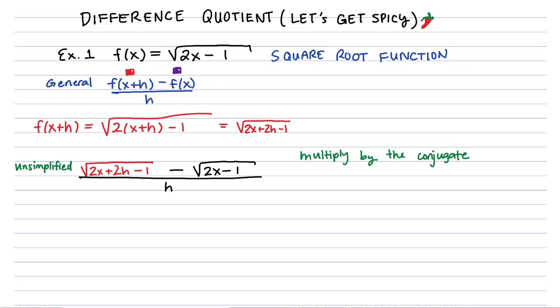So to multiply by the conjugate, what that's going to translate to is we're going to conjugate this minus into a plus. So we're going to multiply by root of 2x plus 2h minus 1 plus root 2x minus 1 over the same thing. We're only allowed to multiply a fraction by 1 so that we don't actually change its value, we just change how it appears.